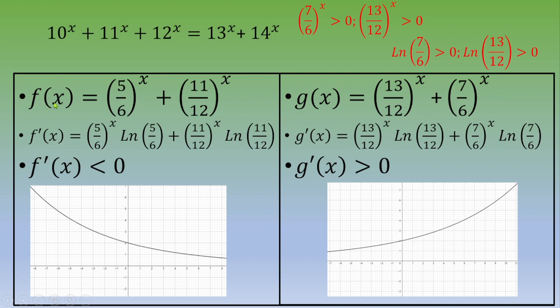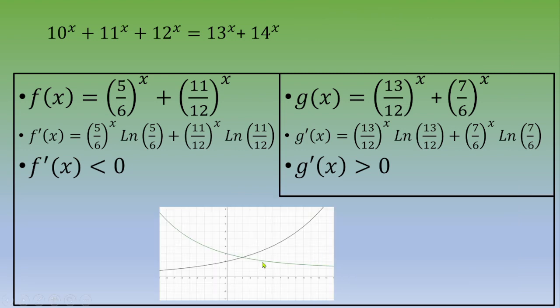f is strictly decreasing and monotonic, and g is strictly increasing. So you've got one single point in common. Therefore, there is only one solution. Thanks for watching this video, and I hope to see you in a next video.